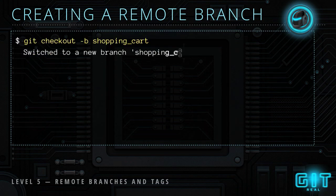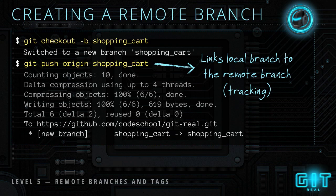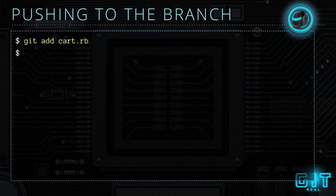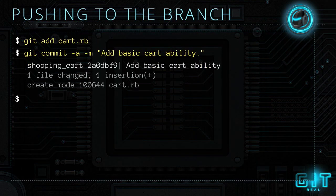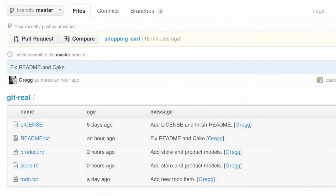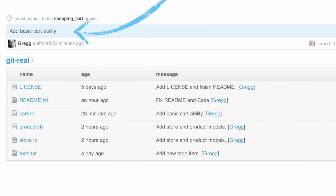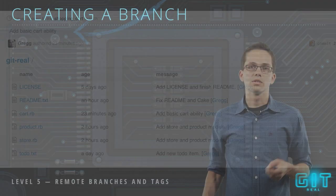We create a shopping cart branch, then to push it to GitHub we simply run `git push origin shopping-cart`. That links the local branch to the remote branch and starts tracking it. We do some work, add the cart, do a commit, and when we push, because it's a tracking branch, it knows to push the local shopping cart branch to the remote shopping cart branch. If we jump over to GitHub and click that branch button, we can see a list of all remote branches, click on shopping cart, and see the last commit and all the files.